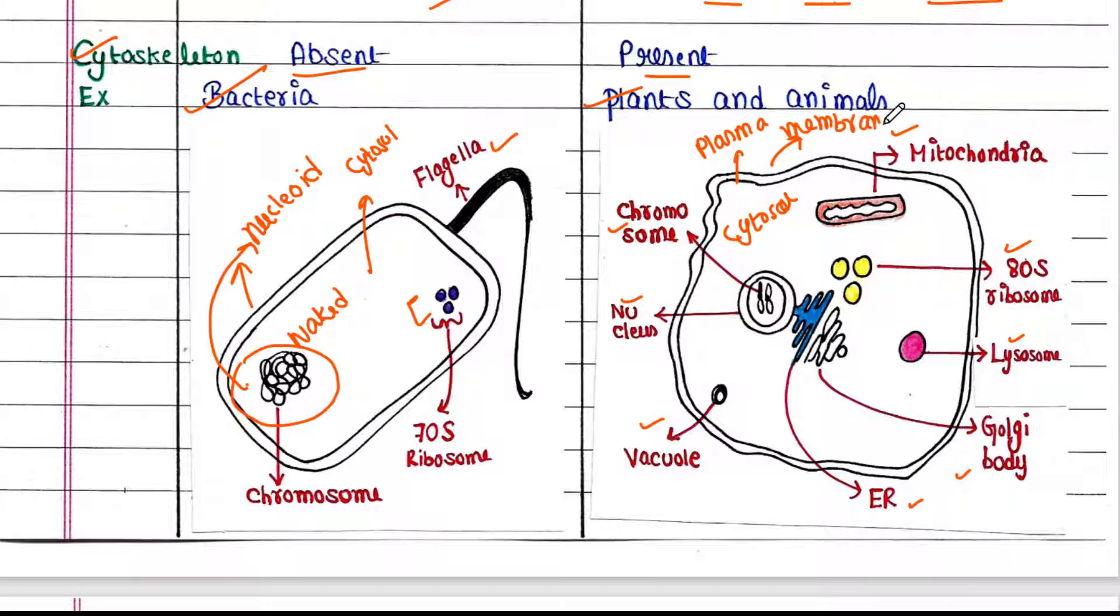The plasma membrane that surrounds the cell is found in eukaryotic cells as well as prokaryotic cells. But the cell wall is present in prokaryotic cells outside the plasma membrane. In the case of animal cells, this cell wall is absent. But in plants, the cell wall is present.